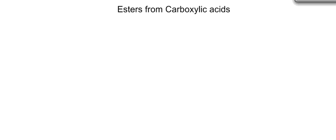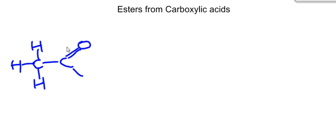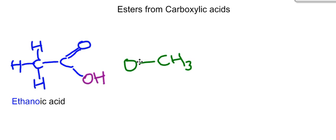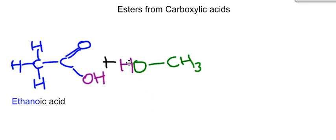We've got our carboxylic acid - here it is. As you'll notice, I've drawn the OH in a different colour, just to remind me. Name that carboxylic acid for me. I'm going to add to that a methanol. Again, notice that as I'm adding it, I'm using a different colour for the OH, so that we can keep track of where things are going.